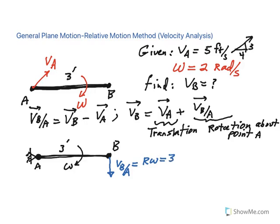R is 3 feet, and omega is 2, so that becomes 6 feet per second. And look at the direction of it. It has to be 90 degrees to the radius and in the direction of omega, so it's pointing down. So now go ahead and plug it into the equation.